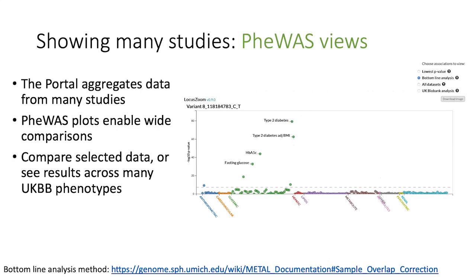The PheWAS represents all the p-values for one single variant across a wide range of phenotypes. Using some clever method development from colleagues, there is a bottom-line analysis option. You can choose to show most p-values from many datasets, or you can run this bottom-line analysis that corrects for sample overlap to provide the best available information for each given phenotype. You can also compare that data to a PheWAS of a large dataset like the UK Biobank.